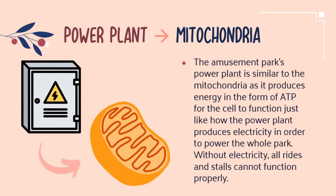Without electricity, all rides and stalls cannot function properly, thus making it boring and at the same time dangerous for visitors. Luckily, Yukar Park has a power plant which is similar to the mitochondria of the cell, as it produces energy in the form of ATP for the cell to function, just like how the power plant produces electricity to power the whole park.